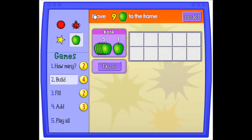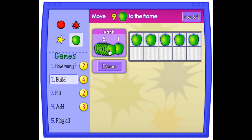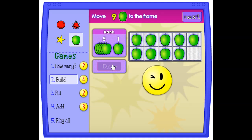Move nine apples to the frame. You can move nine into the frame by moving two groups of five and then taking away one. Done. And that works as well.